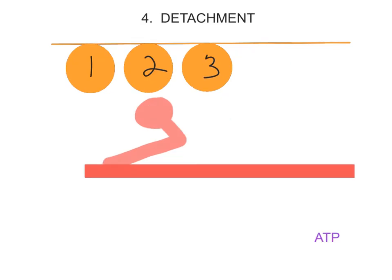In the final stage, detachment, a molecule of ATP binds to the myosin head. And this causes the myosin head to detach from that binding site that was on the actin molecule. So it is now free to again start the cycle over again.